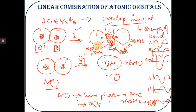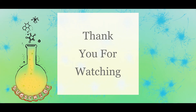This is how the linear combination of s atomic orbitals occurs. One of the key factors governing overlapping is the phase of the atomic orbitals.